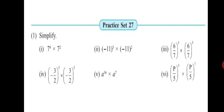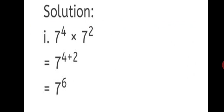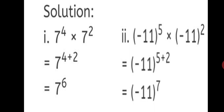Question number 1 has 6 sums to simplify. First sum: 7 raised to 4 into 7 raised to 2. Using the formula, 7 remains as it is; just add the index: 4 plus 2 gives the final answer 7 raised to 6. Second sum: minus 11 raised to the power of 5 into minus 11 raised to the power of 2. Minus 11 remains as it is; add the index: 5 plus 2 equals 7. Final answer: minus 11 raised to the power of 7.